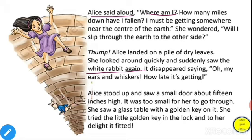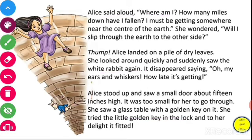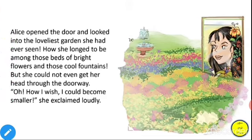Alice landed on a pile of dry leaves. She looked around quickly and suddenly saw the white rabbit again. It disappeared saying, 'Oh my ears and whiskers, how late it's getting.' Alice stood up and saw a small door about 15 inches high — it was too small for her to go through. She saw a glass table with a golden key on it. She tried the little golden key in the lock and to her delight it fitted. Alice opened the door and looked into the loveliest garden she had ever seen. She longed to be among those beds of bright flowers and cool fountains, but she could not even get her head through the doorway. 'Oh wow, I wish I could become smaller!' she exclaimed loudly.